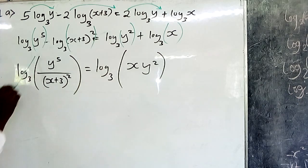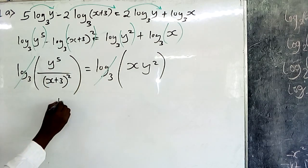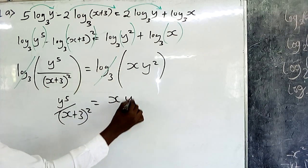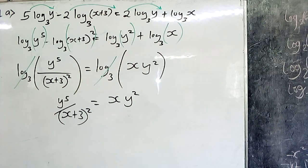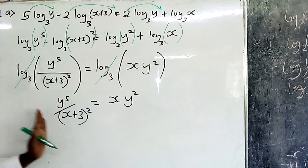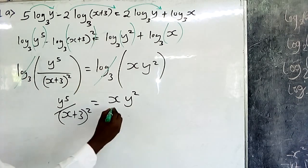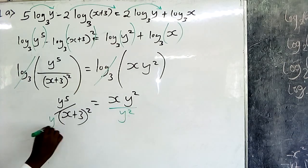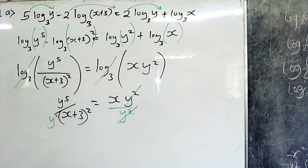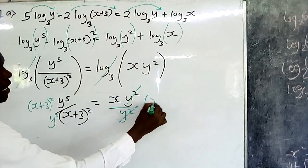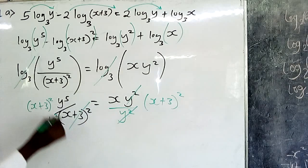The next step is to get rid of the log on both sides of the equation. After removing the log from both sides, we remain with y⁵ / (x+3)² = xy². So now we make y the subject of the formula: terms in y go to one side and terms in x go to the other. We divide both sides by y² so that y² cancels, then multiply both sides by (x+3)².